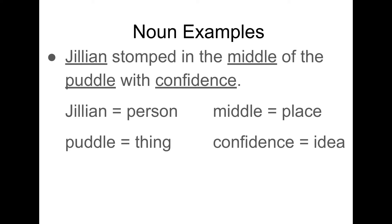Another example: Jillian stomped in the middle of the puddle with confidence. Jillian is a person, middle is a place even though it's not a specific place, puddle is a thing, and confidence is an idea.